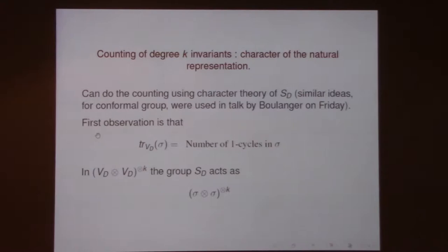We're going to use character theory — as was used in the conformal group by Nicholas on Friday — and we can do the counting of these S_D invariants within the character theory of S_D. The first observation is: what is the character of the permutation in this defining representation? It turns out to be something very simple — it's the number of one-cycles in that permutation.